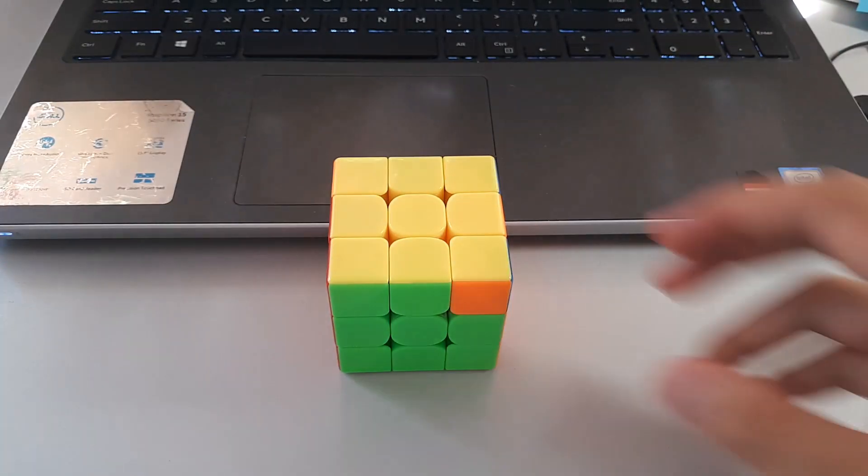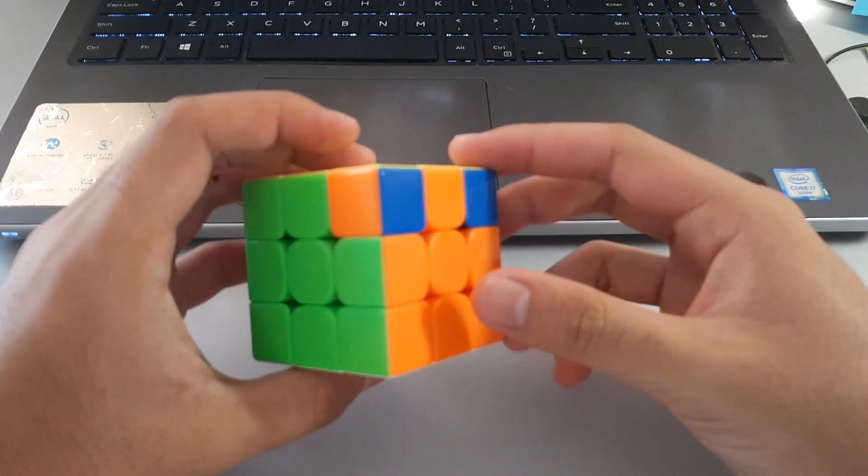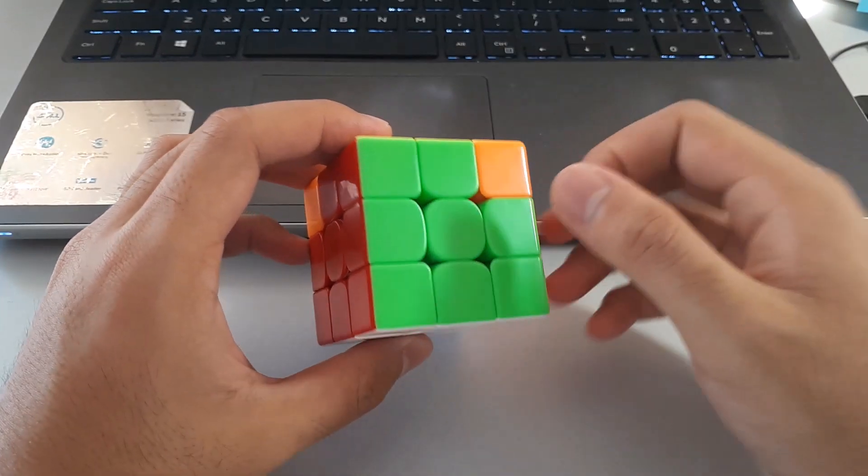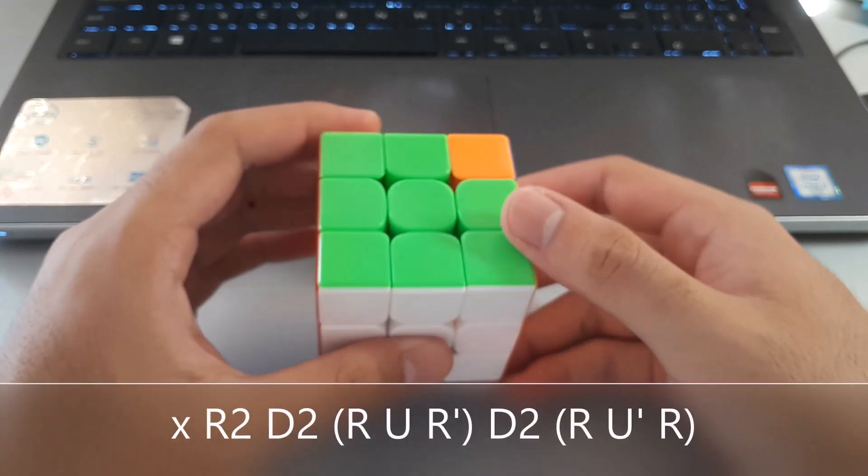For the AB perm, there are also two algorithms you could use. The first one involves rotating down and doing this algorithm.